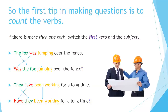Was the fox jumping over the fence? Next: 'They have been working for a long time.' How many verbs here? Three: 'have been working.' We need to switch only the first verb and the subject. 'Have they been working for a long time?' The other two verbs remain in the same position.